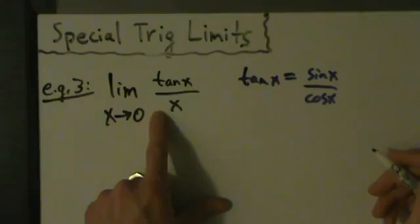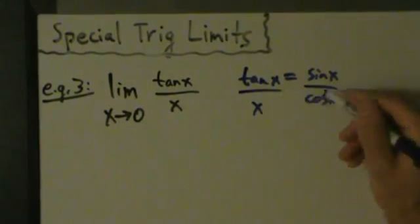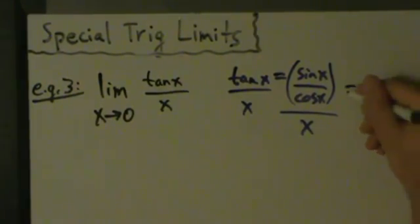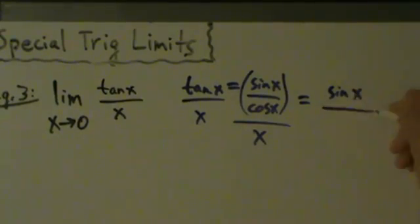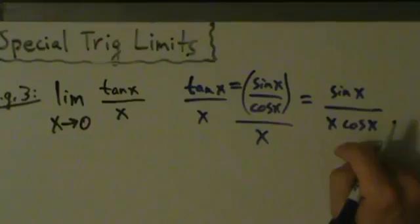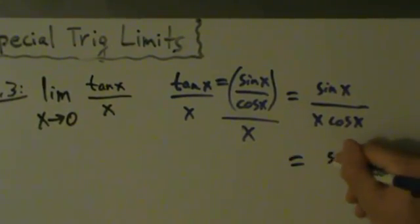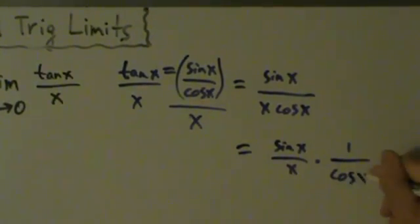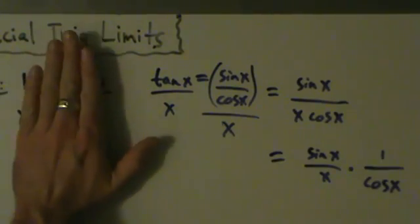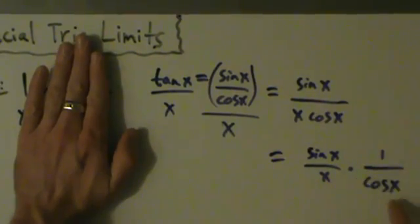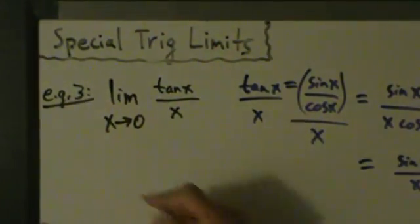So we have tangent of x over x. We take tangent of x — which is sine of x over cosine of x — and divide it by x. Another way of writing that is sine of x divided by x cosine of x. We can rewrite this as sine of x over x times 1 over cosine of x.